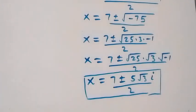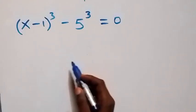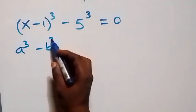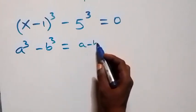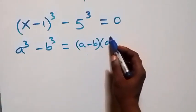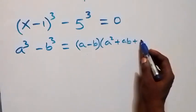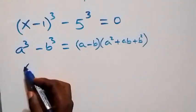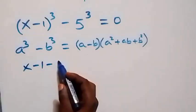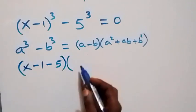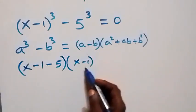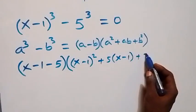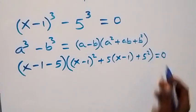Now from the second case: x minus 1 raised to power 3, minus 5 raised to power 3, equals 0. This follows from difference of two cubes: a cubed minus b cubed equals a minus b, multiplied by a squared plus ab plus b squared. So we have x minus 1 minus 5, into bracket x minus 1 squared, plus 5 times x minus 1, plus 5 squared, equals to 0.